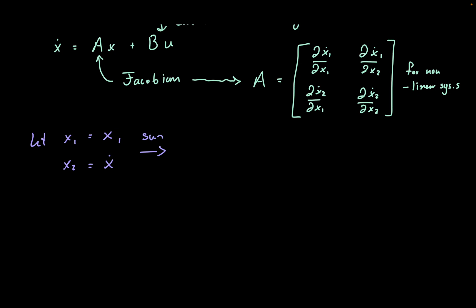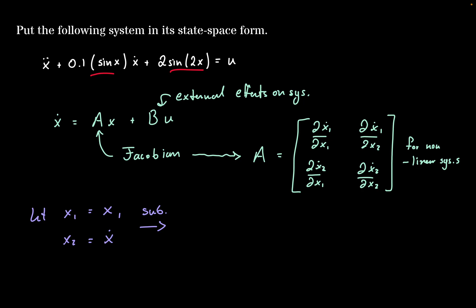we can then substitute it for our original equation. We have x double dot, but we said x2 is going to be equal to x dot. So we can write x2 dot plus 0.1 times sine of x, which we said would be x1, times x dot, which we said would be x2, and then plus 2 times sine of 2x, which would be x1, and then we'll set that equal to u.